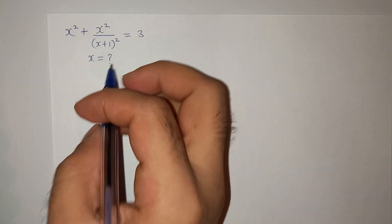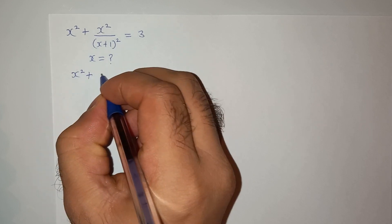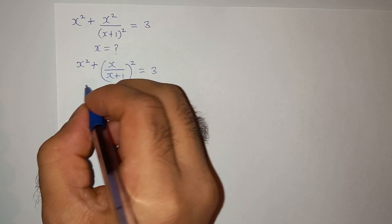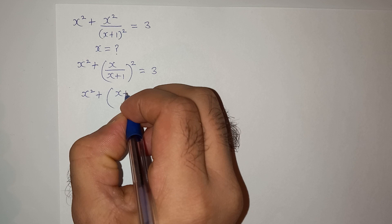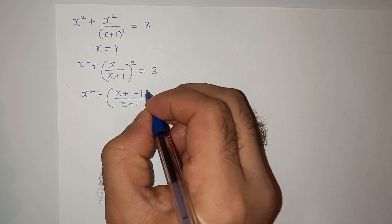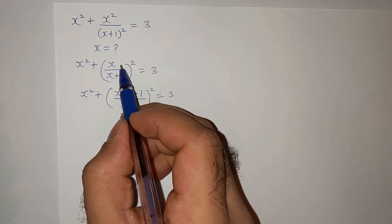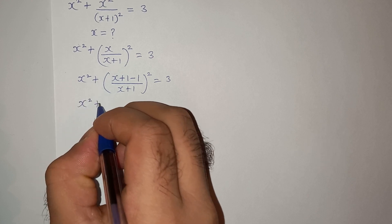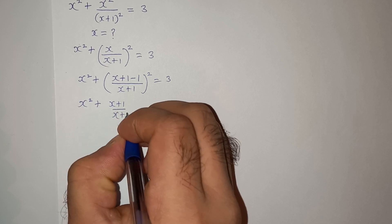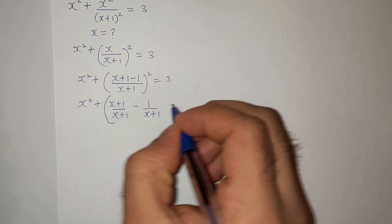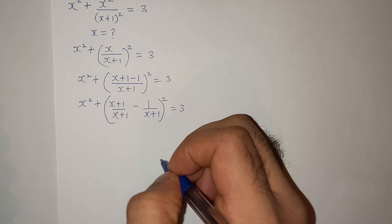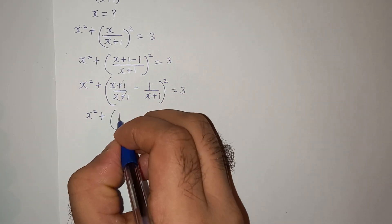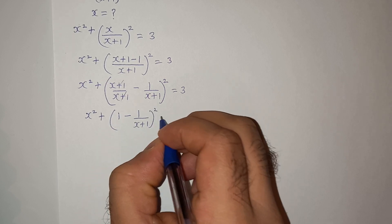Let's try to solve this problem. We can write this equation as x² + x/(x+1) whole square equals 3. Now we can write this as x² × [(x+1-1)/(x+1)]² = 3. Basically, I have added 1 and subtracted 1 in the numerator to get (x+1)/(x+1). So we write this as x² × [1 - 1/(x+1)]² = 3.